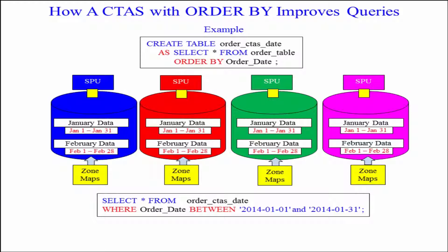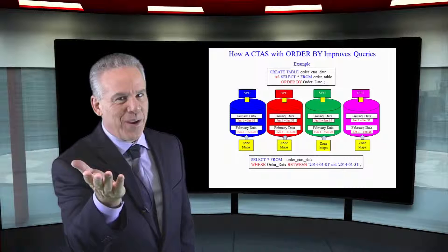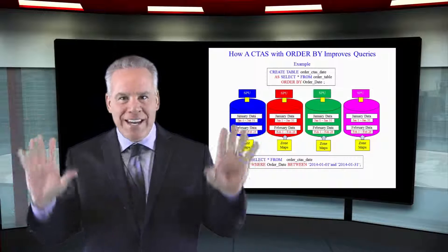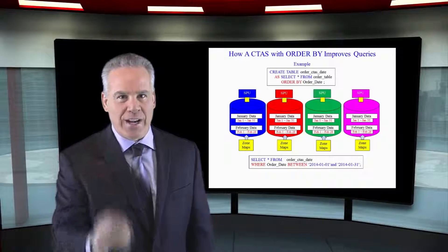So when a user writes a query and says, you know, I want to see what happened in January, then each zone map is first read in on the FPGA card. And they don't even consider reading that February data because they know the min and max of that was February 1st to February 28th, or the 29th if it's leap year. And so, there's no need to read that if you're looking for January data.